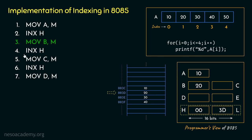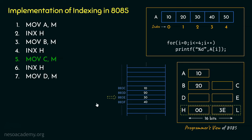Again, we execute INX H, incrementing the entire HL register pair. The content of the HL pair is now 003E, so the microprocessor will point to address 003E, which contains the data 30. Executing instruction number 5, MOV C, M, the content of this memory location will be moved into general purpose register C — so 30 will be moved to register C.